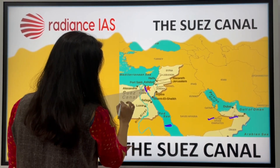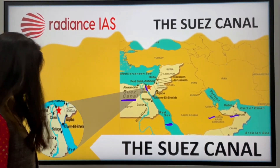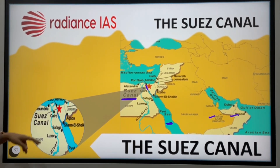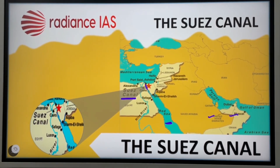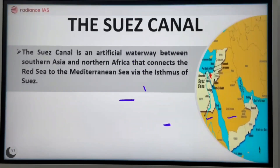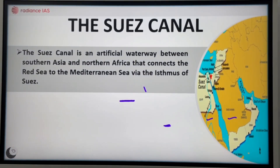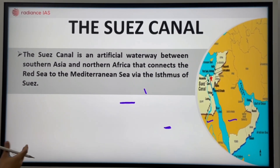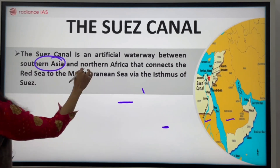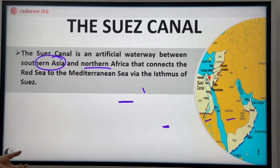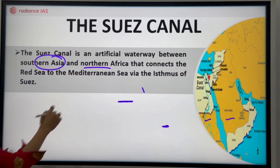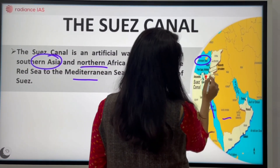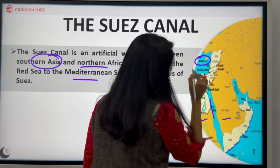This is an artificial waterway connected to the Swiss Canal region. It has been an artificial waterway connected to the soil. The other region is managed through the Southern Asian region. This region connects the Red Sea to the Mediterranean Sea. This is a region where you have the Red Sea, and this is a small passage of the Swiss Canal.